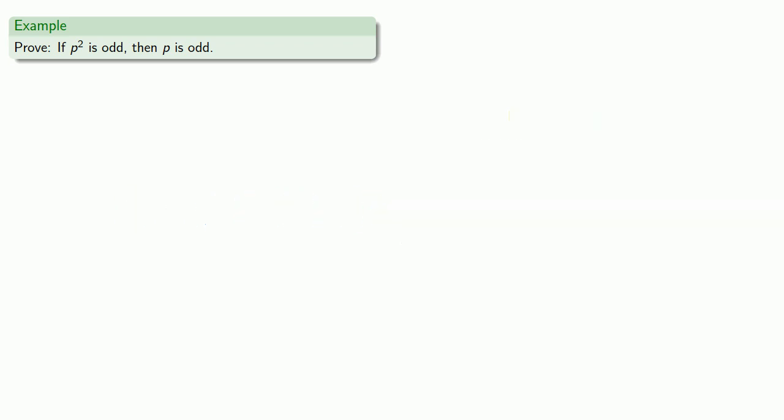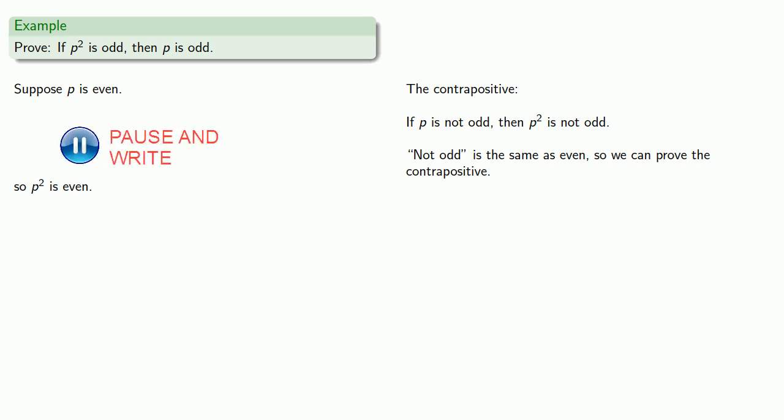So let's build that up. So again, it might be easier to work with the contrapositive, which allows us to work with p instead of p². And so our contrapositive is... Now, not odd is the same as even, so we can prove the contrapositive. So we can begin with our premise, set down our conclusion. Definitions are the whole of mathematics. All else is commentary. If p is even, then...